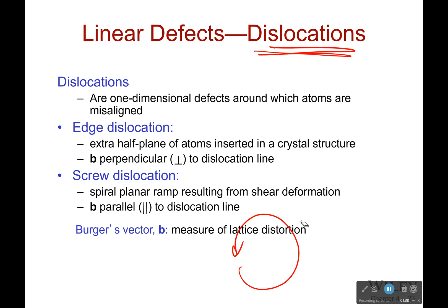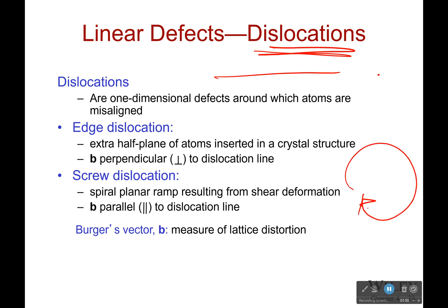Dislocations are one-dimensional defects. We have point defects, now we have a line. These are one-dimensional defects around which - and 'around' is the key word, that's why I was talking about these little cycles - atoms are misaligned. There are two types, and we're going to see one of those today. There is the edge dislocation, which has a Burgers vector perpendicular to the dislocation line, and a screw dislocation, where the Burgers vector is parallel to the dislocation line.